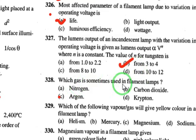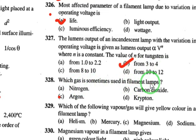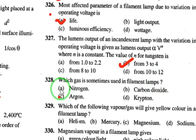The gas sometimes used in filament lamps is nitrogen.